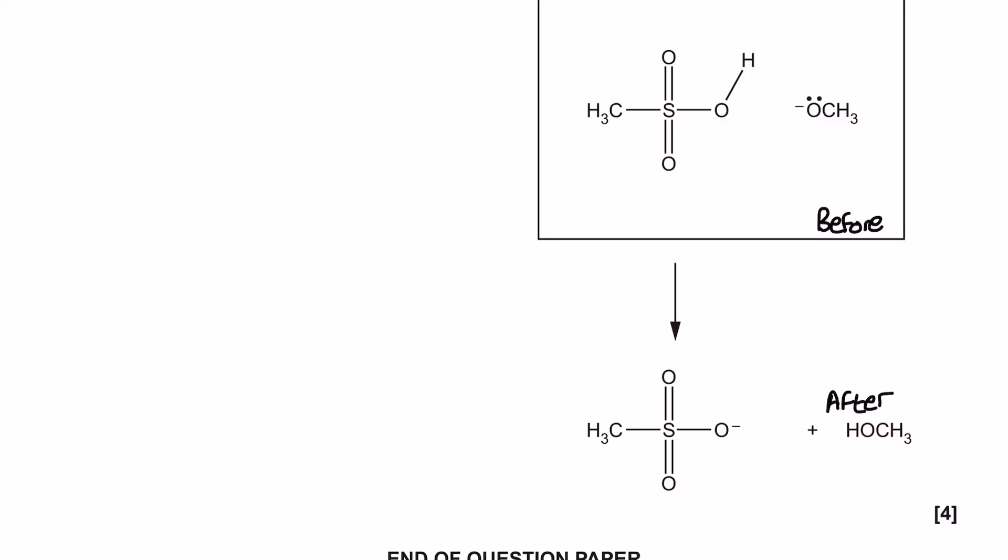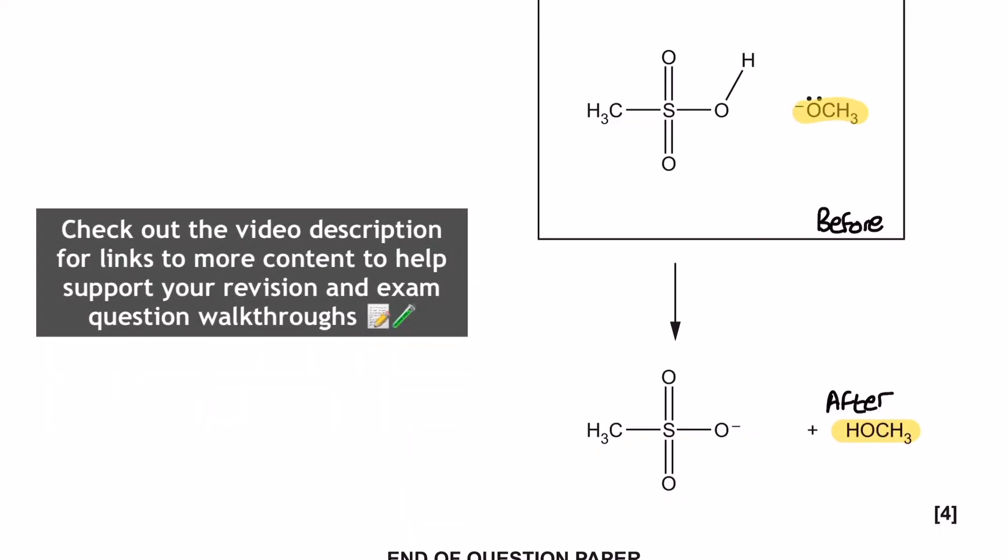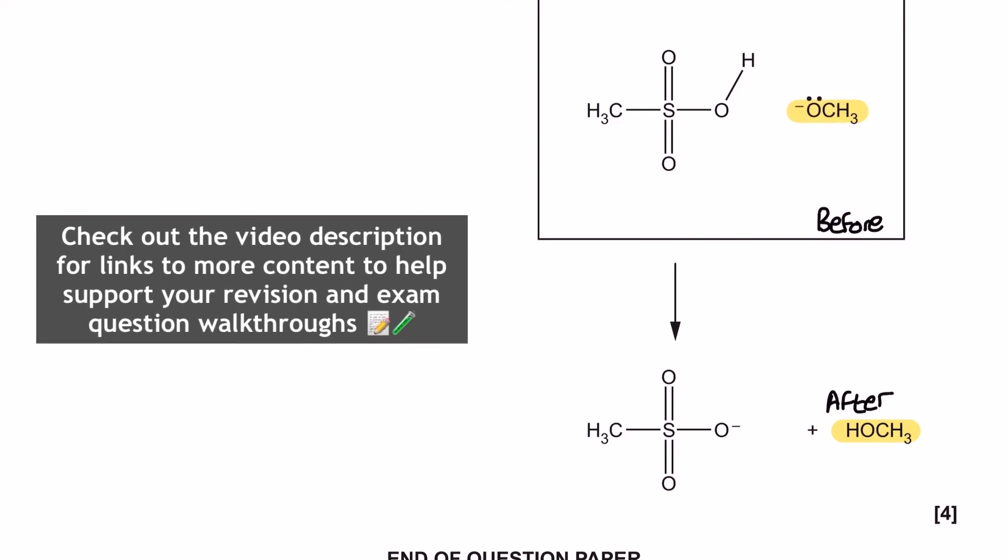So, let's have a look at what's changed this time. Well, we can see here we've got a slight modification to the second structure. It's picked up a proton. So, the difference between the two highlighted yellow sections here is the fact that the latter, the one at the bottom in the after section, has picked up a proton.